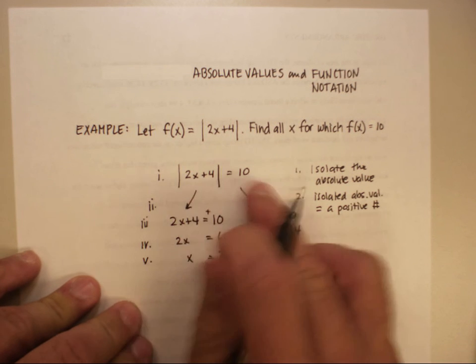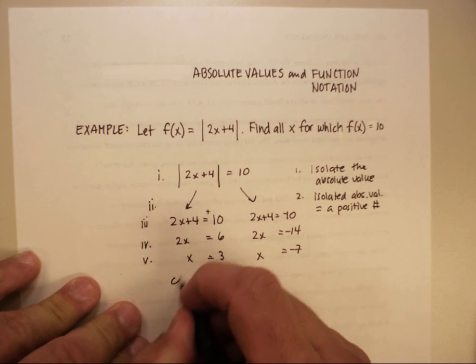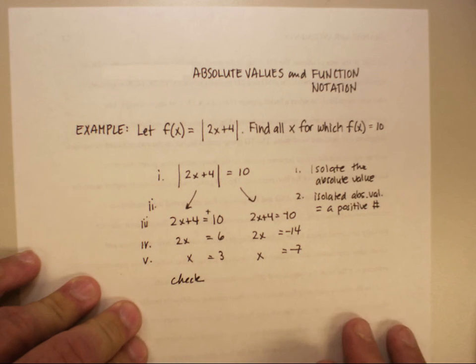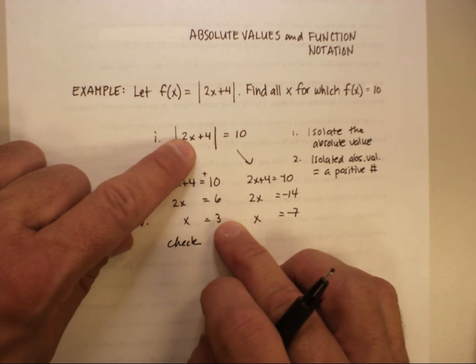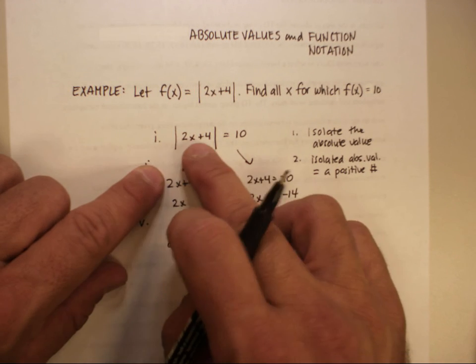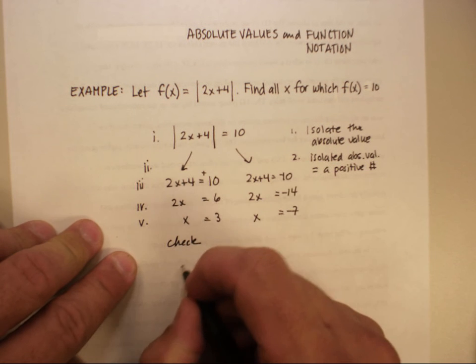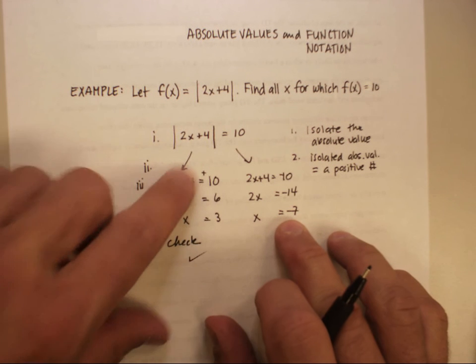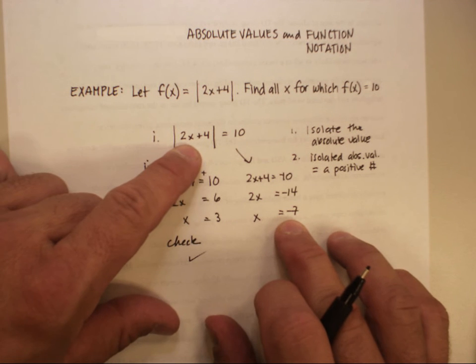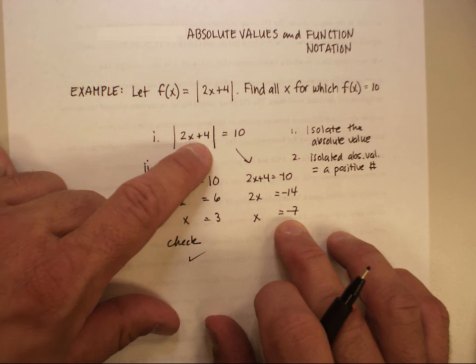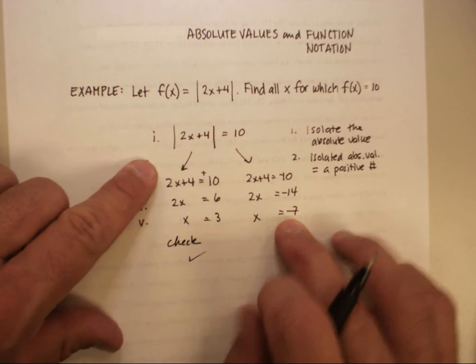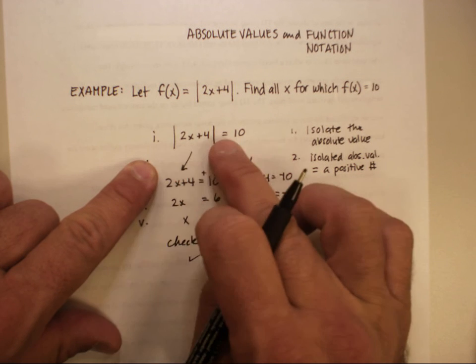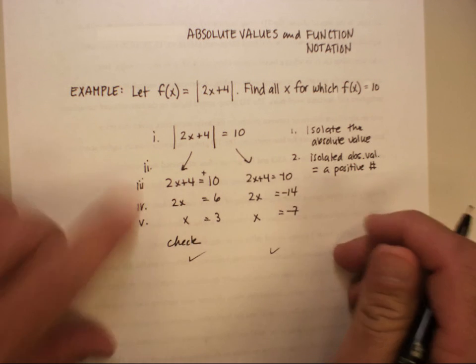So let's just test those and see if they work. So quick check. 2 times 3 is 6. 6 plus 4 is 10. The absolute value of 10 is 10. So this one works. 2 times negative 7 is negative 14. Plus 4 is a negative 10. But the absolute value of negative 10 is still 10. So this one works as well.